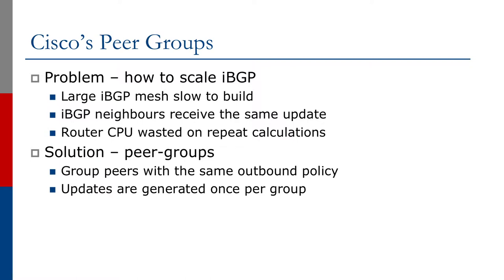Every IBGP neighbor received the same update in a full mesh, and the way that IOS was implemented in the early years was the router would calculate the update to go to an IBGP neighbor, send the update, and then repeat the same thing for every single neighbor. Obviously this isn't very efficient. If you have 50 neighbors, you have 50 updates to compute and then 50 updates to send.